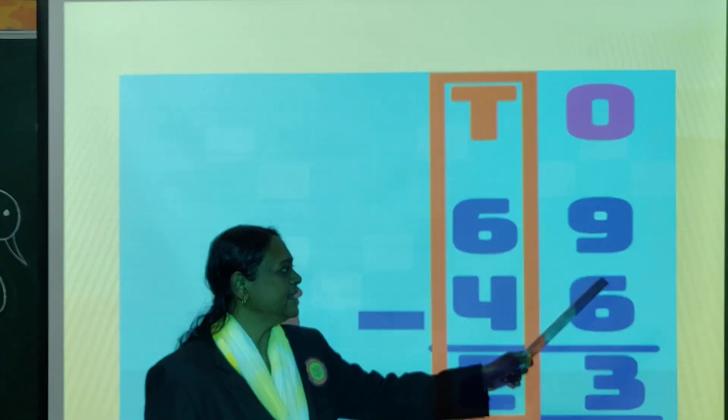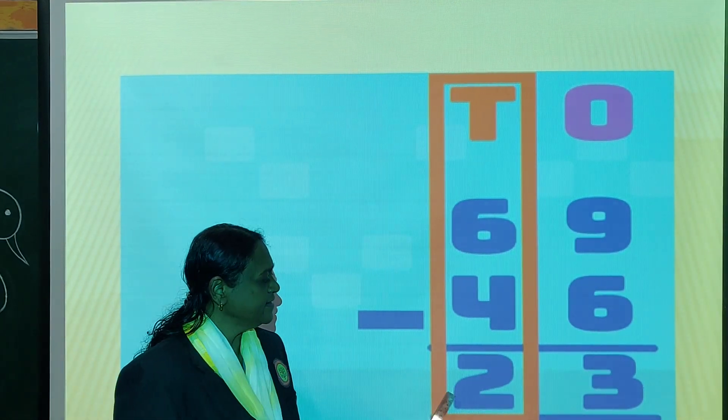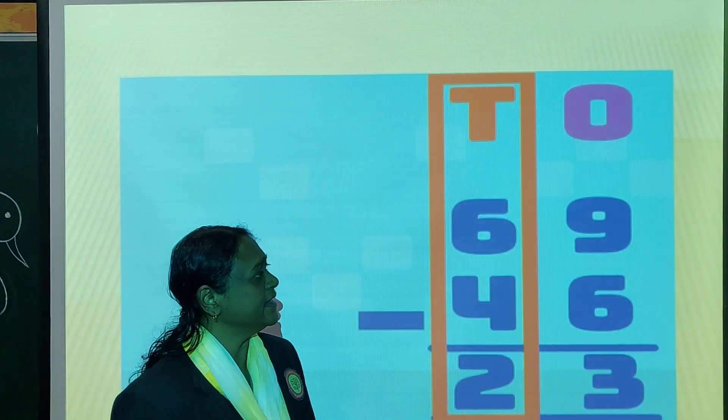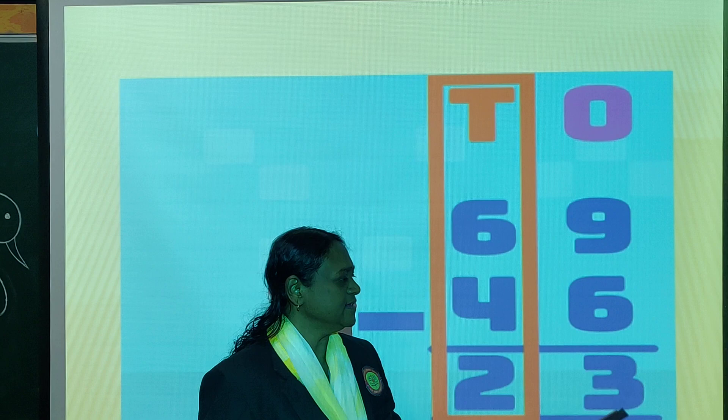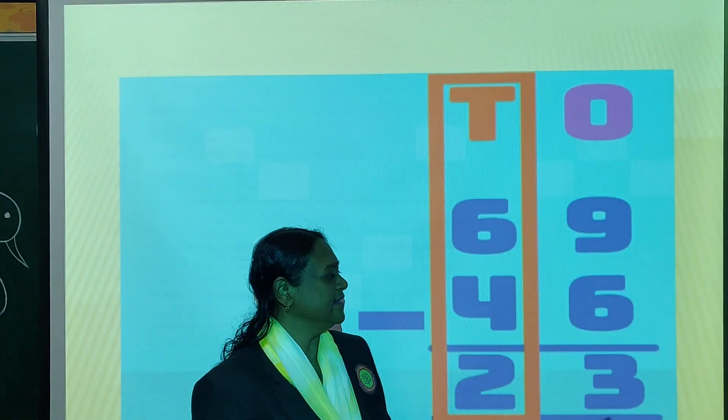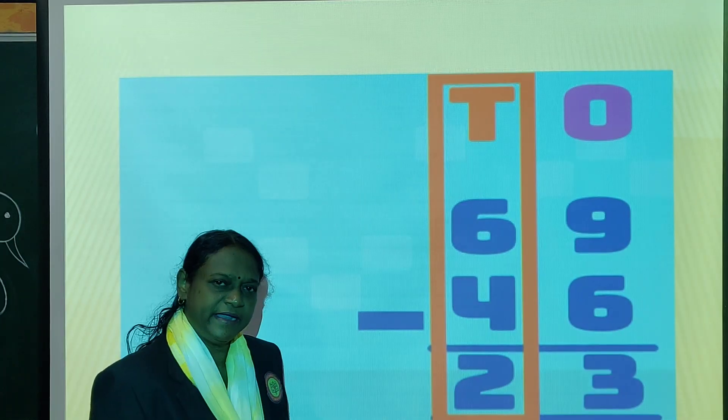Now 69 minus 46, answer is 23. But we have to always remember that first we have to minus from right side, that is ones side, then from tens.